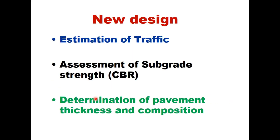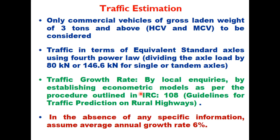Design of the road is a three-step process: first, determine the traffic; then assess the subgrade strength in terms of CBR; and then determine the pavement thickness and composition using the pavement catalog. In traffic estimation, only commercial vehicles with gross laden weight of 3 tons and above are considered.